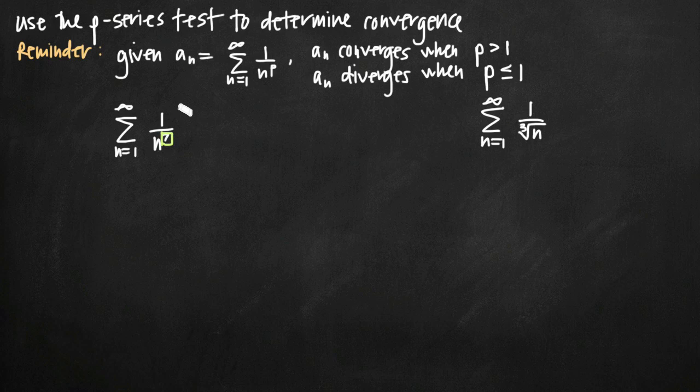So in this first series we have 1 over n to the 7. All we need to say is that the exponent 7 is greater than 1. We're only interested in whether it's greater than, less than, or equal to 1. And because 7 is greater than 1, therefore we can say that this series, we'll call this one a sub n, converges because 7, the exponent, is greater than 1. So it's just as easy as that.